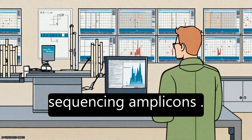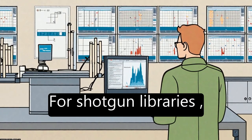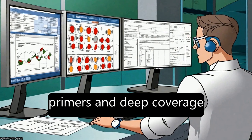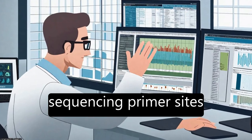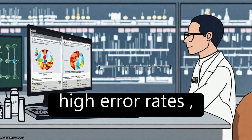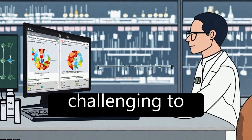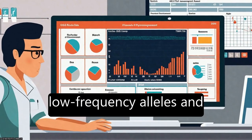For shotgun libraries, using both sequencing primers and deep coverage, combined with random sequencing primer sites can help compensate for high error rates, although it may be challenging to distinguish between low-frequency alleles and errors.